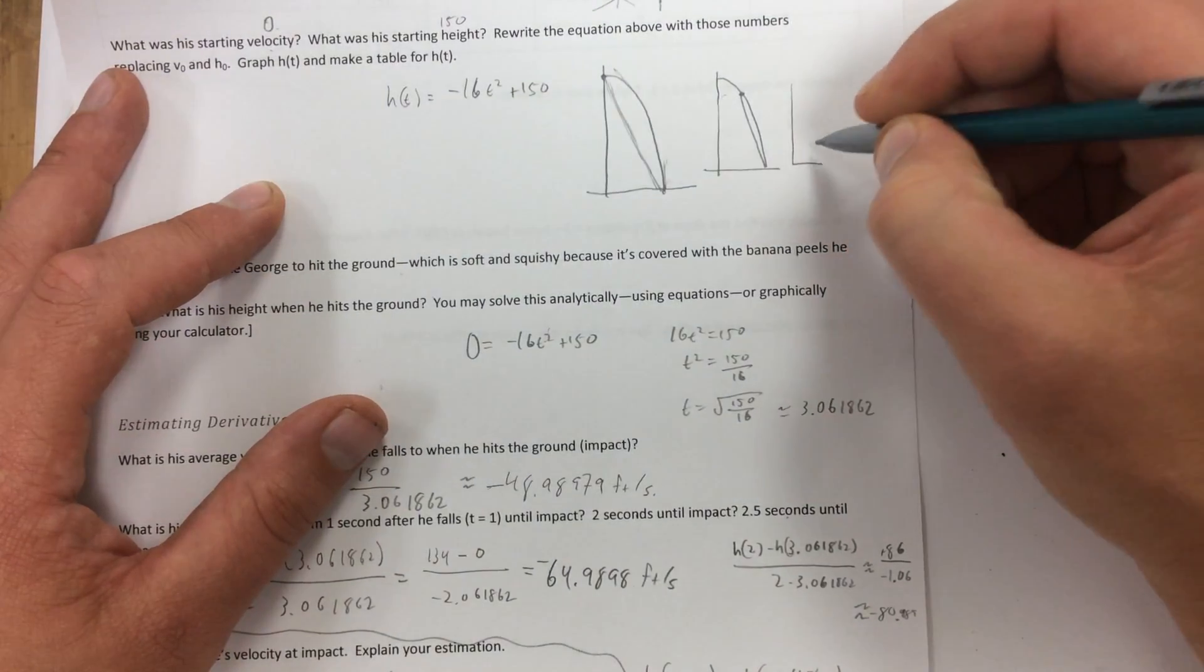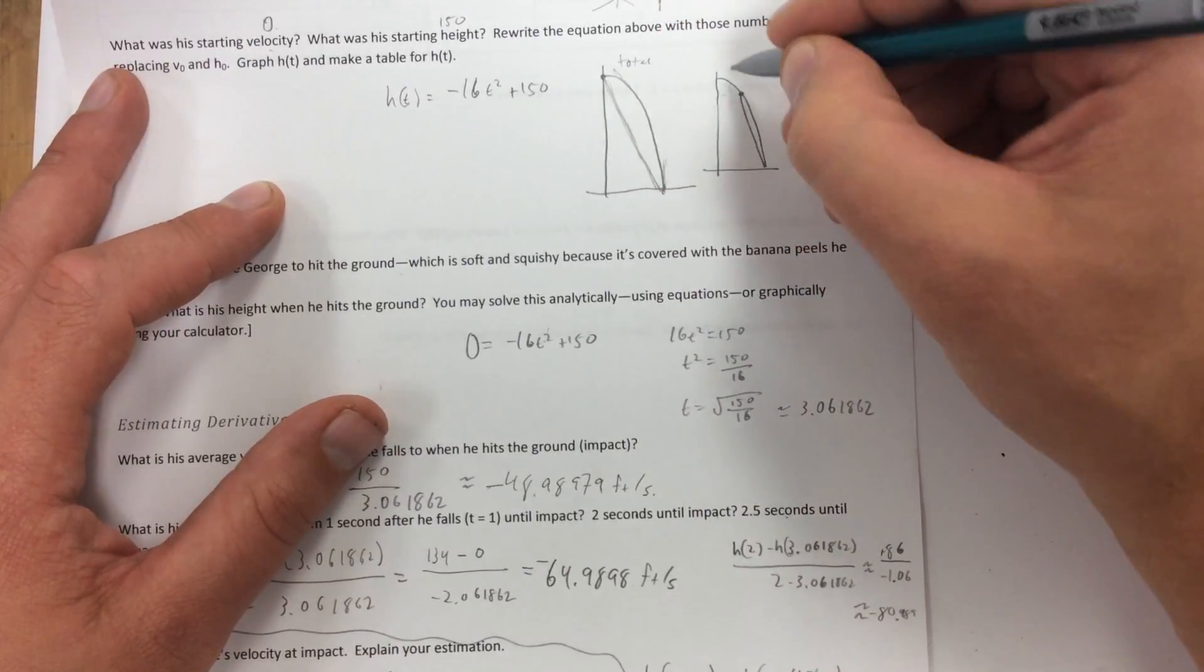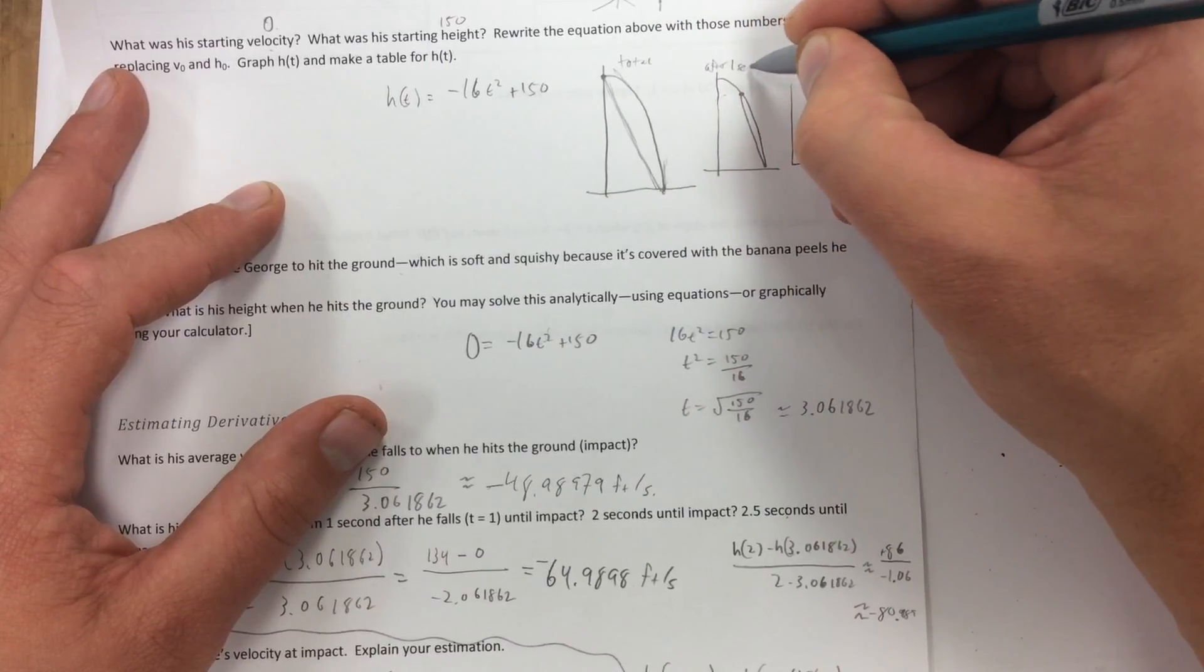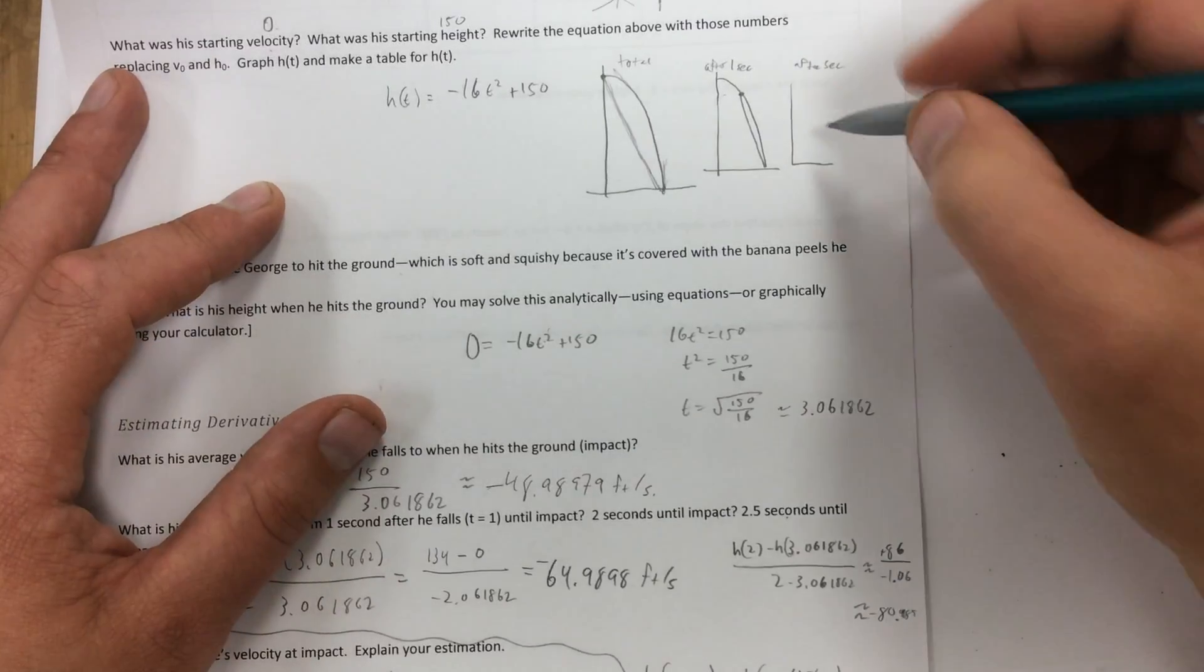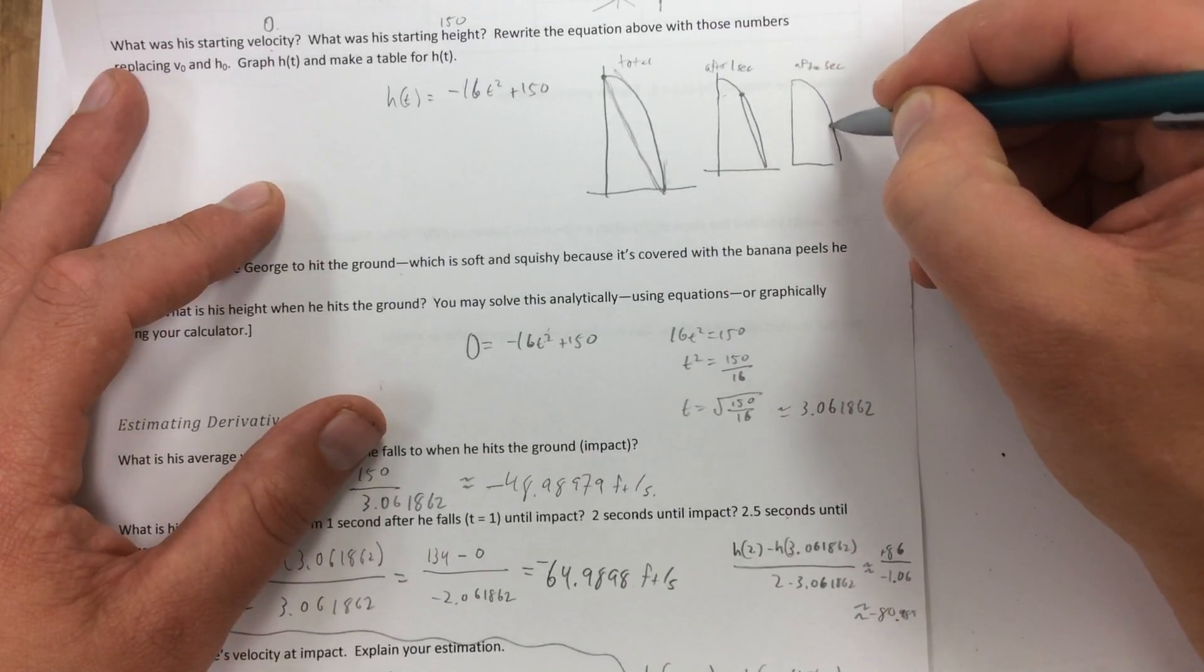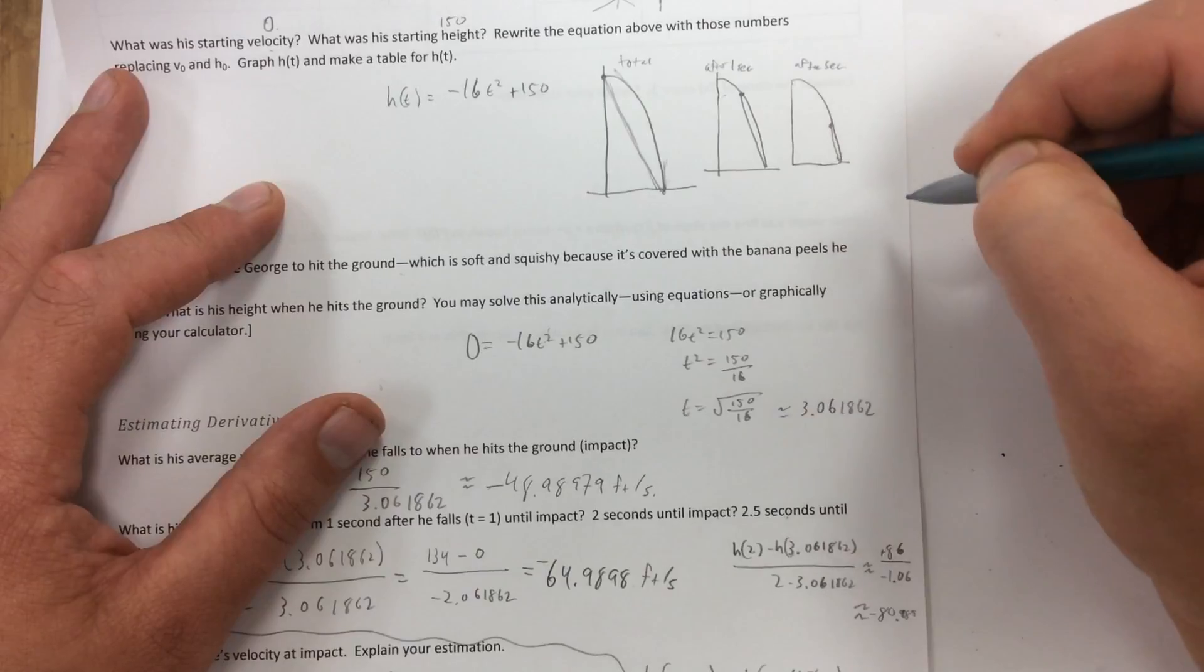What about from two seconds? This is total. This is after one second. After two seconds. So two seconds right here, I'm finding that slope. I found that slope to get the average velocity over that short a period of time.